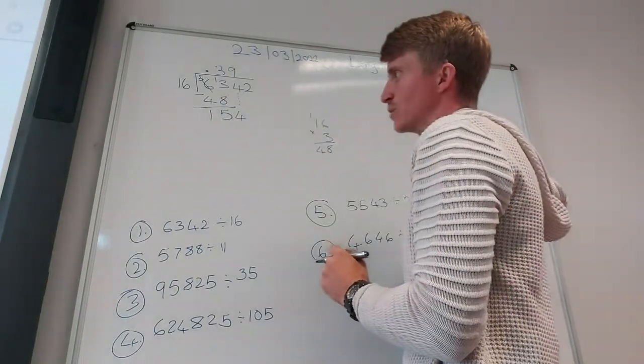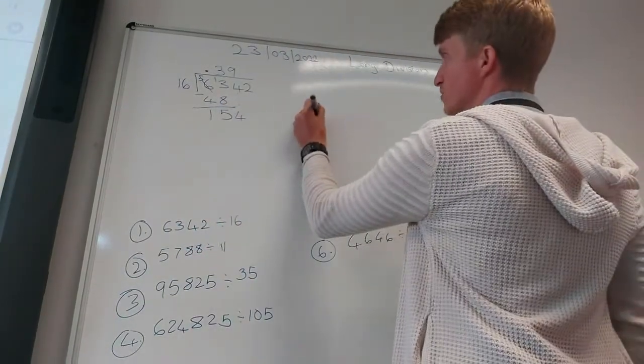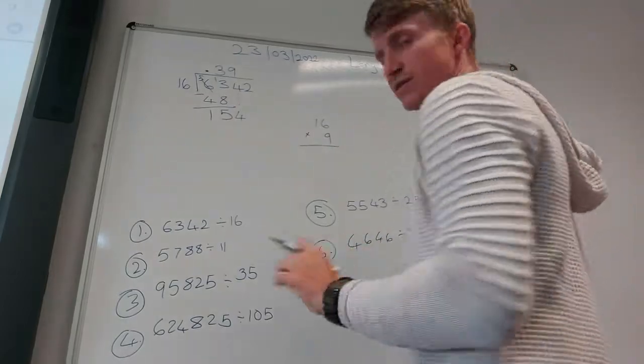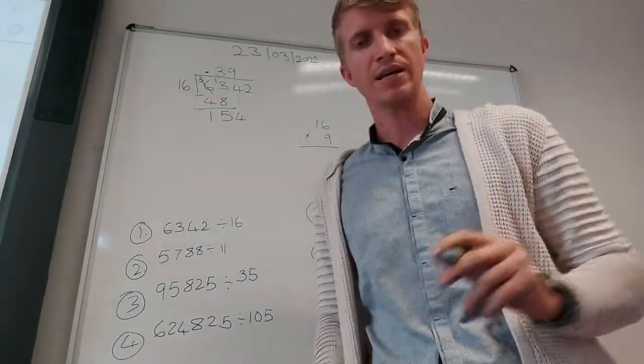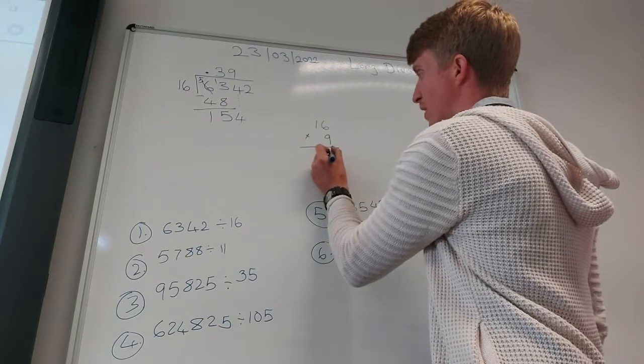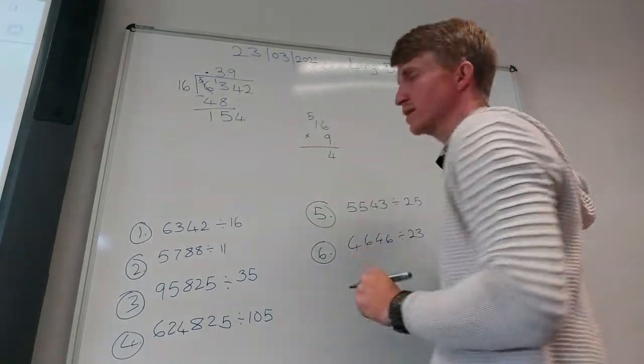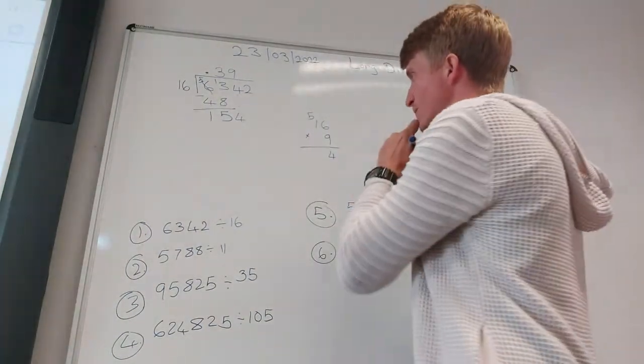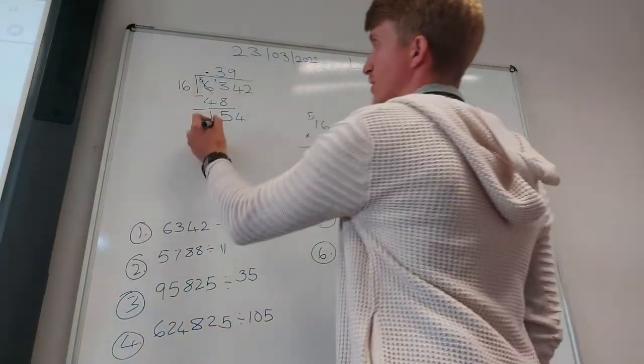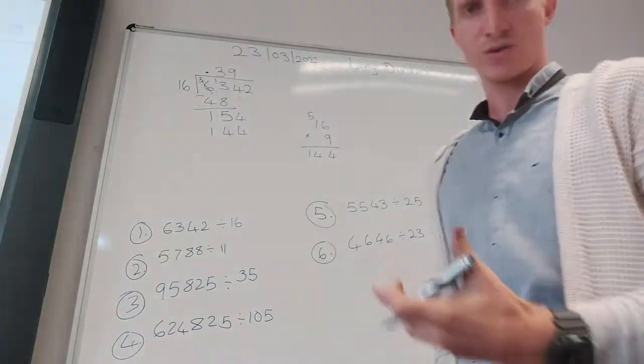9 times 16 equals... Again on the side we can do a nice little long multiplication. So again 16 times 9. 9 times 6 equals 54. So I write my 4, 5 there. 9 times 1 equals 9 plus that 5 that was carried over equals 14. So I've got 144. I bring that down here. I can see that one more 16 would not have fitted in there, so my 9 is correct.